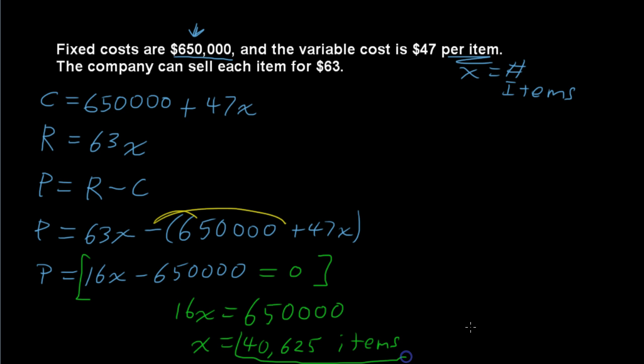Now I'll write that there, break even. If you wanted to make a profit, try to think real quick. How many would you have to sell? At least one more than that, 40,626 to make a profit. But to break even, you have 40,625 items. I hope that helps.